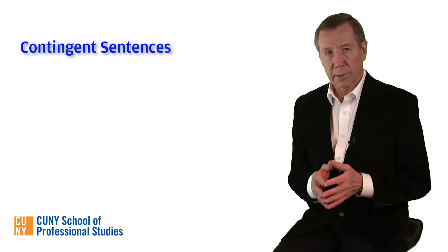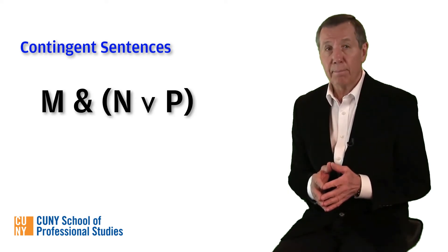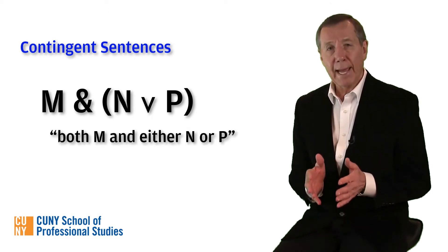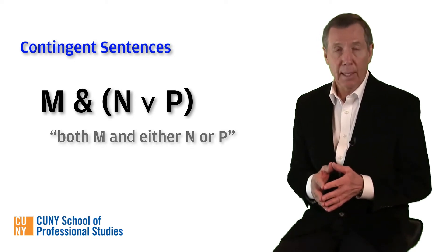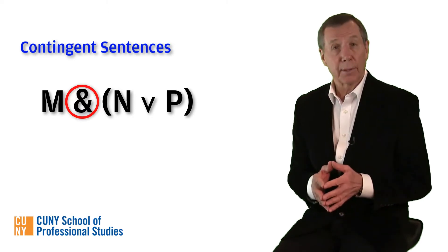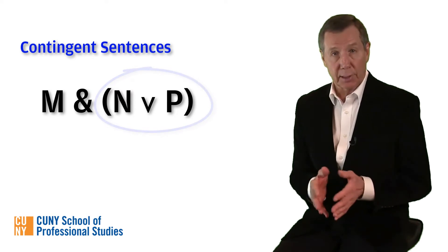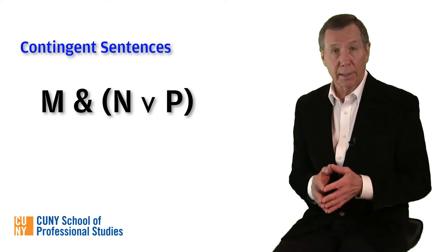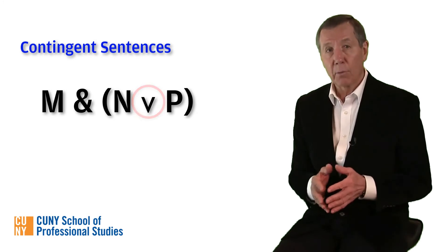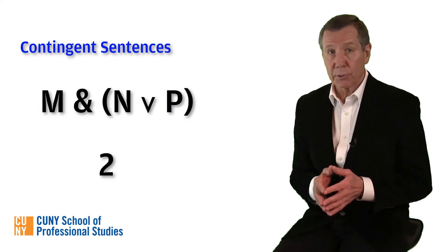Here's our initial sentence: M ampersand open parenthesis N V P close parenthesis. We read this as 'both M and either N or P.' The main connective is the ampersand, so the sentence as a whole is a conjunction. The conjunct on the right, the sub-sentence 'either N or P,' is a disjunction, as we can see by the use of V, our symbol for disjunction. We have three variables — M, N, and P — so our truth table will need eight rows, obtained by exponentiating base 2 to the power of 3.